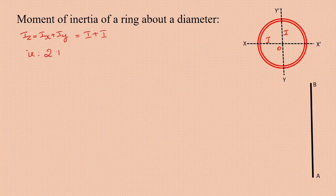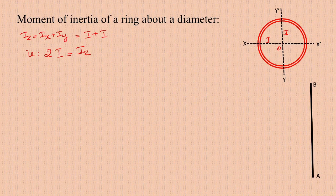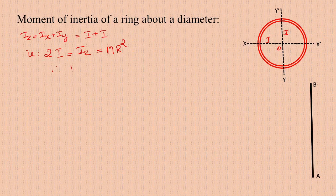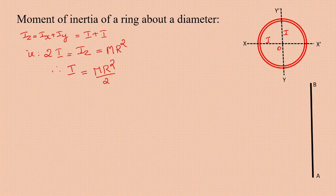2I = Iz = MR². Therefore I = MR²/2. That is the moment of inertia of the ring about a diameter.